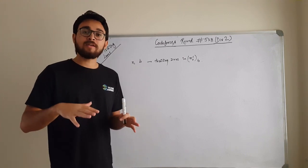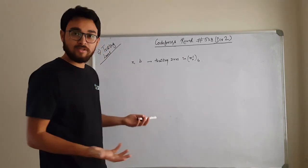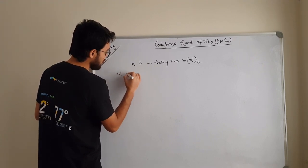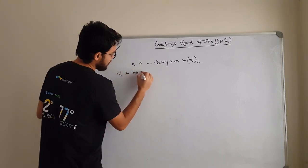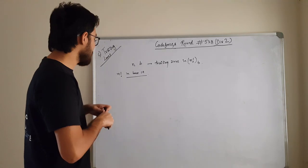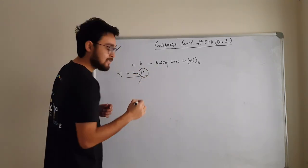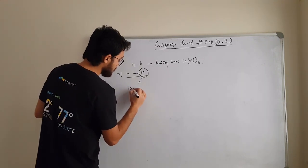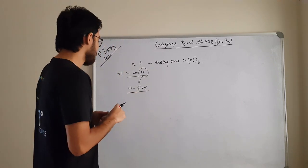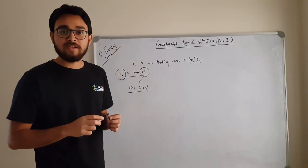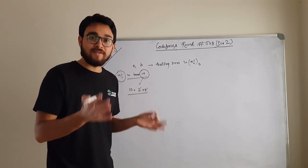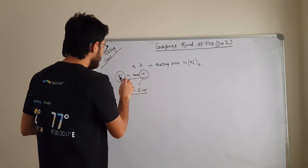First, let's think about this in the decimal-based system that we are very used to. Suppose the question would have been: tell me the number of trailing zeroes in N-factorial in base 10 representation. How would you approach this problem? We will write 10 in its prime factorization form: 10 is basically equal to 2 to the power 1 times 5 to the power 1. To find the number of trailing zeroes in N-factorial in base 10, you need to find the number of times 10 appears as a factor — those many times you will have a trailing zero.